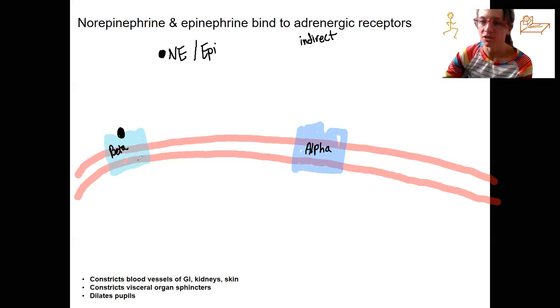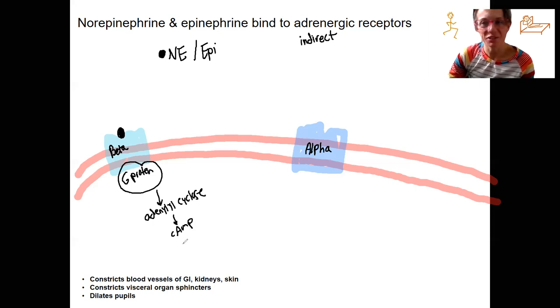The activation of beta receptors is going to increase cAMP. We've got our G-protein. It's going to be activated. It's going to activate adenylyl cyclase. This is going to activate cAMP. This is going to change activity of the cells. There's actually two types of beta receptors. I apologize for that. There is beta 1.